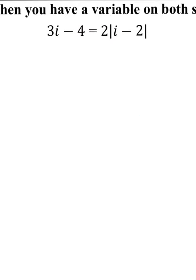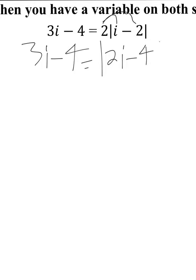Next example: I have 3i minus 4 equals 2 times the absolute value of i minus 2. If you have a number on the outside of your absolute value, you can just distribute it. So you get 3i minus 4 equals the absolute value of 2i minus 4. Then you drop the absolute value bars and solve.